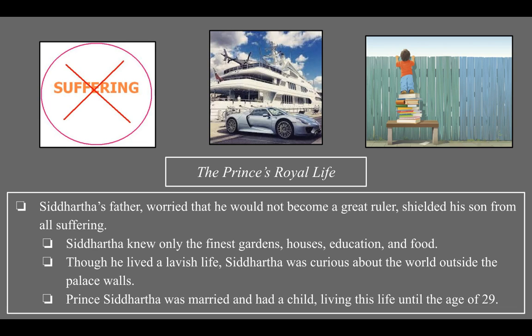Even though he lived this lavish, fancy life, Siddhartha was curious about the world outside the palace walls. Prince Siddhartha was married at the age of 16 to a beautiful young noblewoman, and for 13 years the couple lived together in perfect harmony, enjoying the prince's many palaces. They even had a son — and this continued until the age of 29.